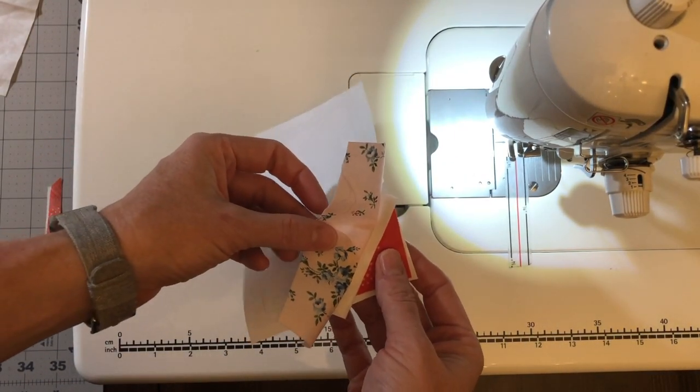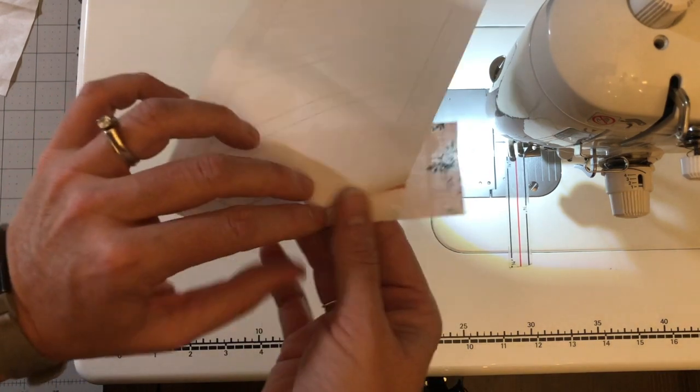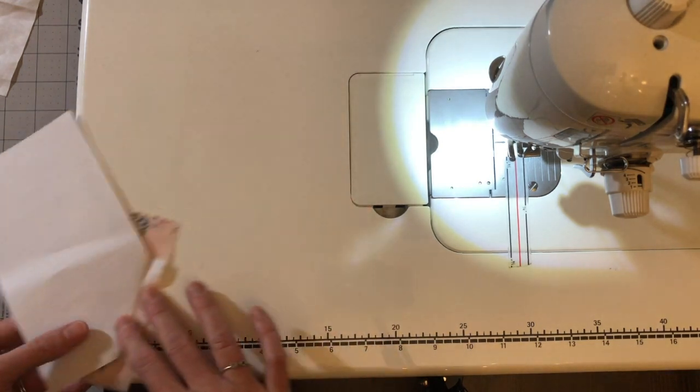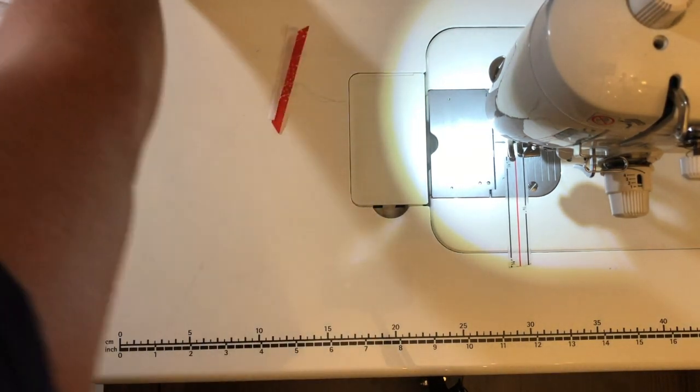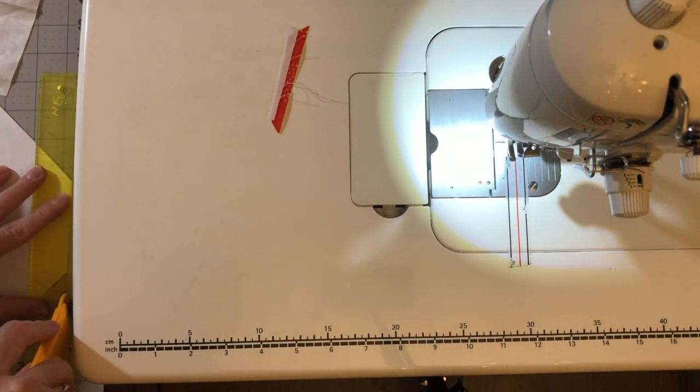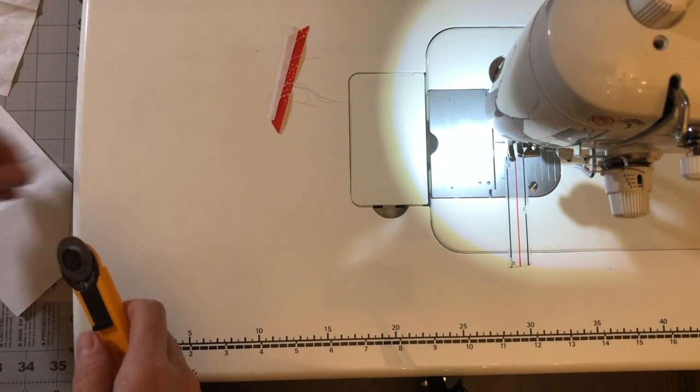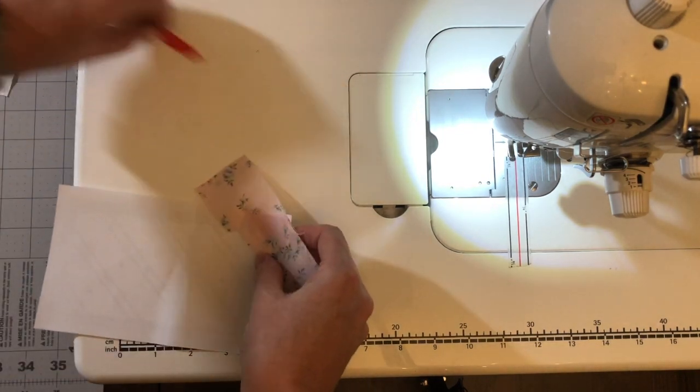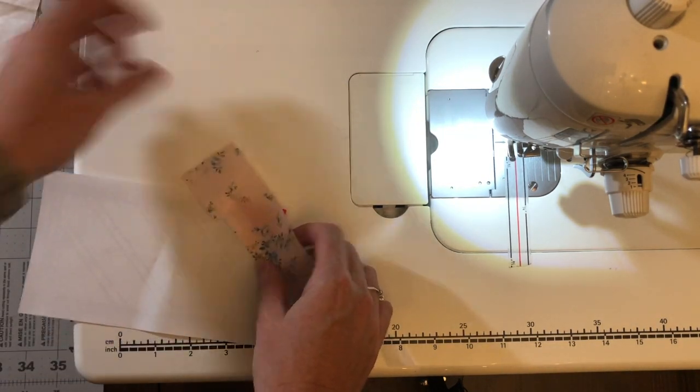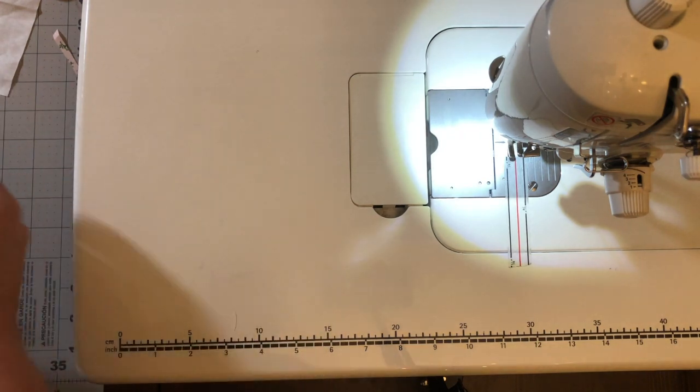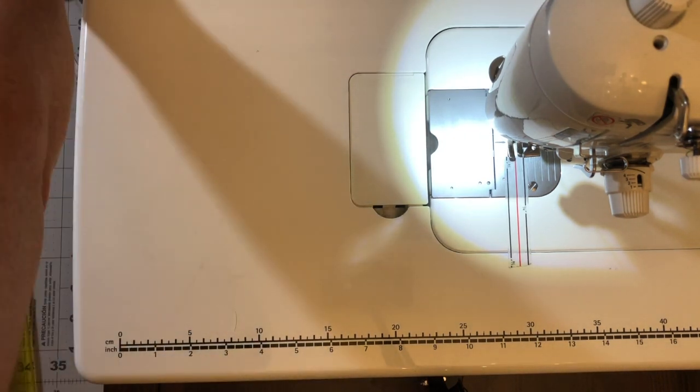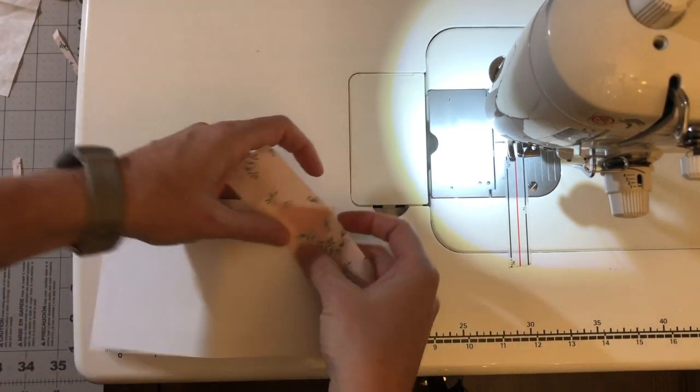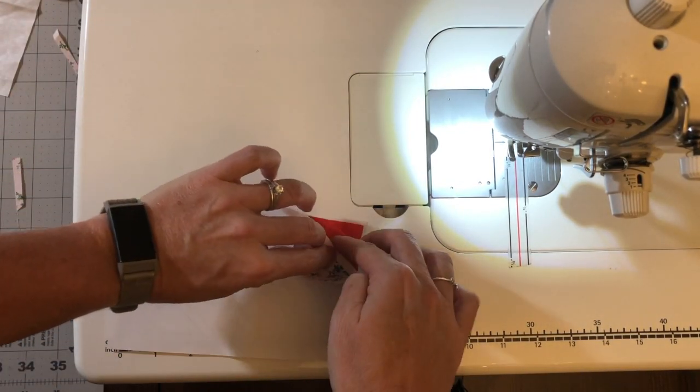Again, I'm going to fold this back along the stitching line and trim. Now, if this is the first time you've paper pieced, this pattern is actually pretty simple for paper piecing. You can do a lot more complex things with paper piecing, but this is not that. This is just straight lines. You're just making a block.